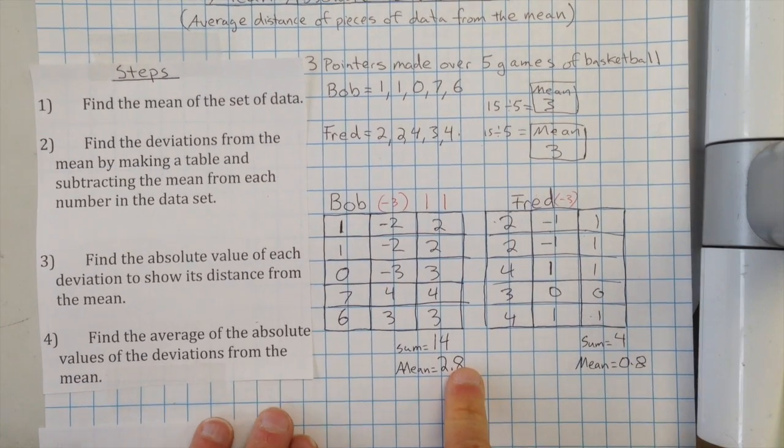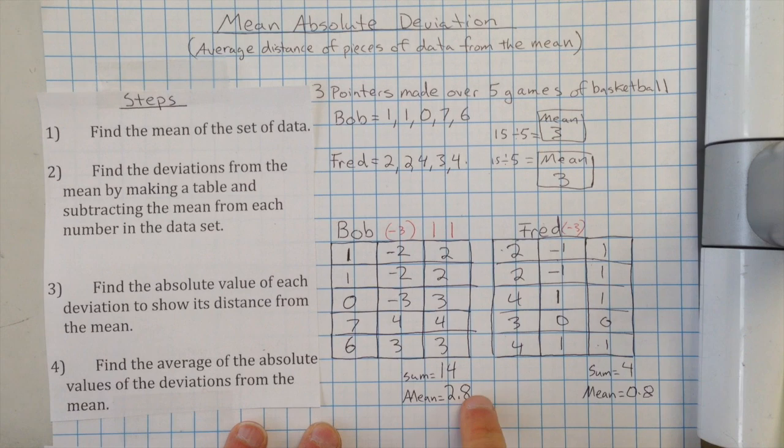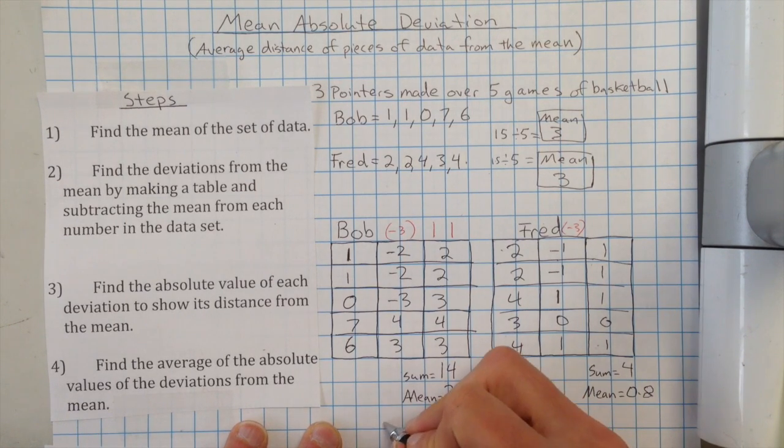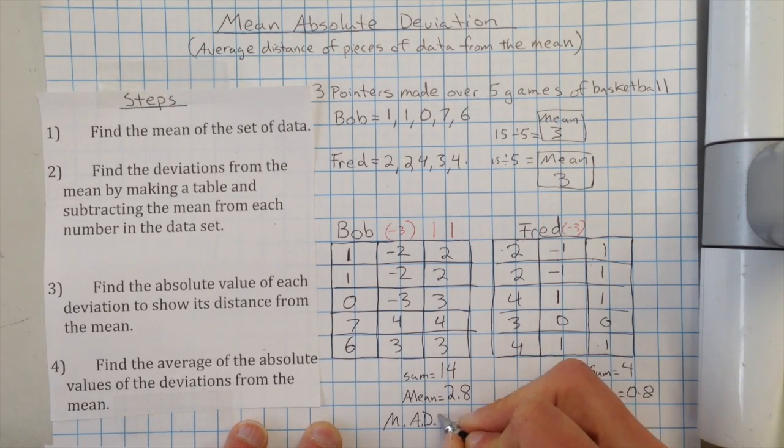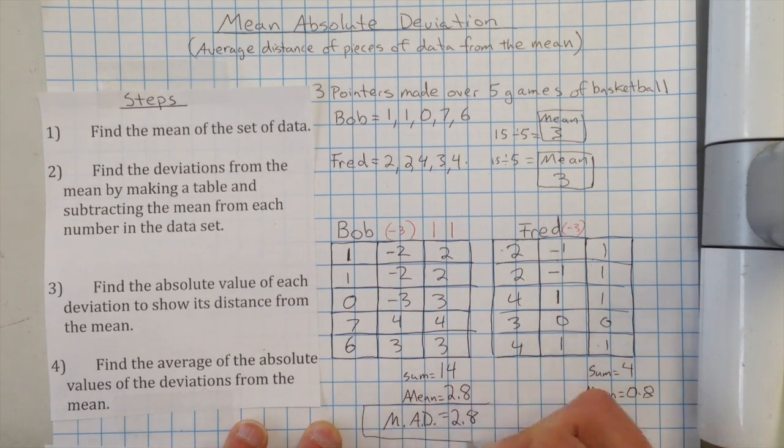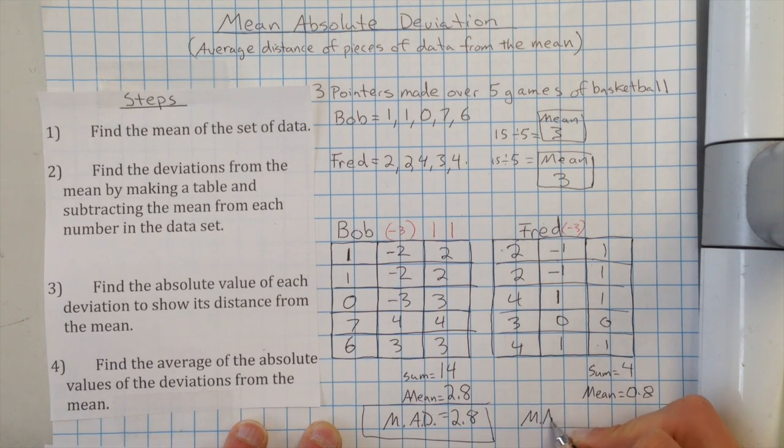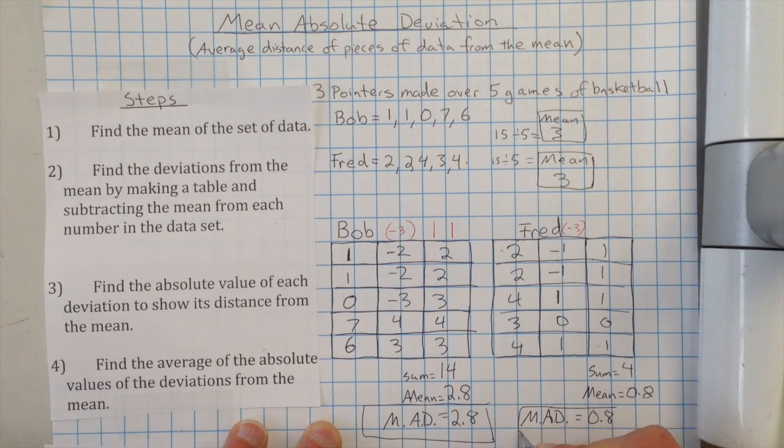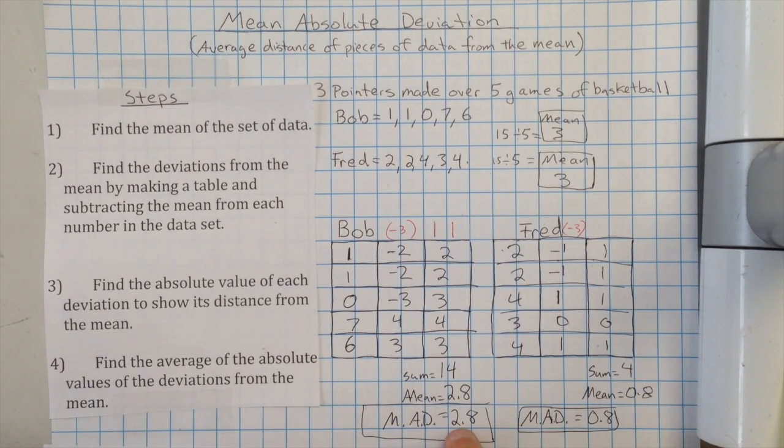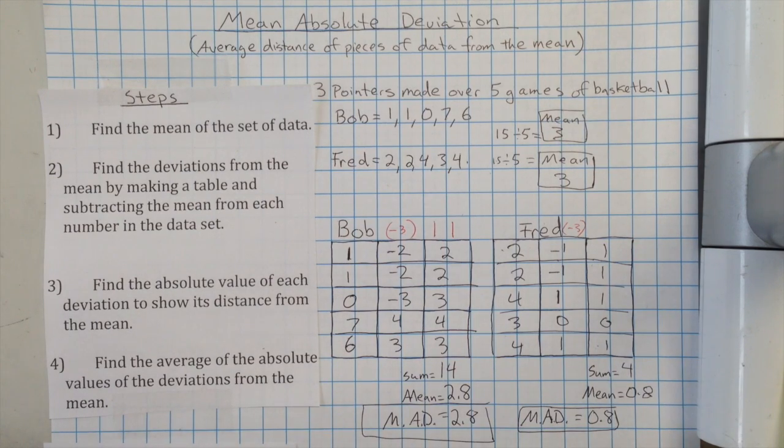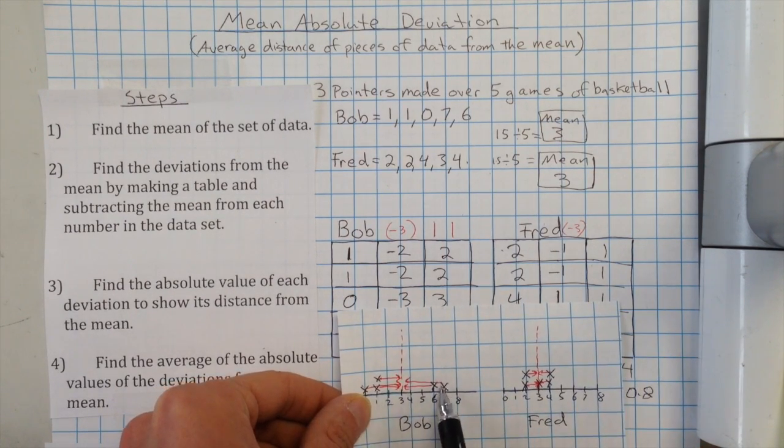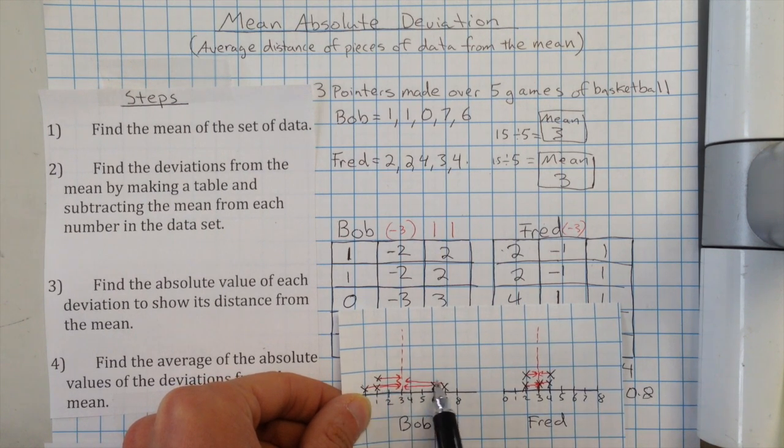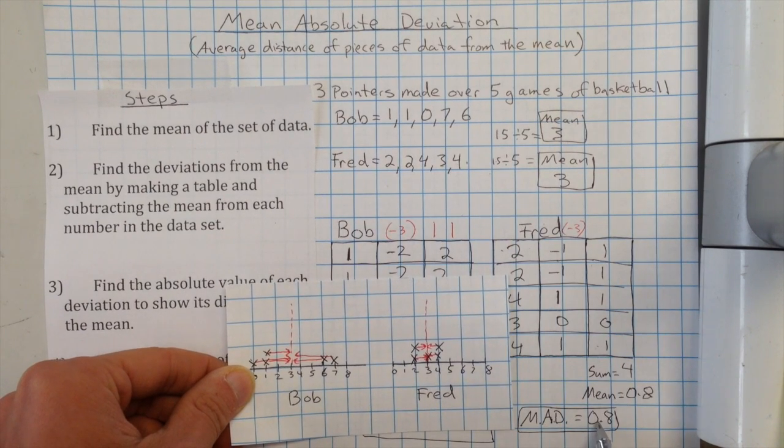Okay. So now what we've figured out is that this right here, this mean, this is the mean absolute deviation. Or you can say MAD. So that's two point eight for Bob. And the MAD, the mean absolute deviation for Fred, is going to be zero point eight. So what does that all mean? That means that the average game he scored, his three pointers made were about two point eight from the mean. And that means his scores were kind of all over the place. Again, if we look at his graph, we can see he either got like none or he got a lot. Even though he had an average of three, he either had good games or bad games. Fred, on the other hand, he had a mean average deviation of zero point eight.